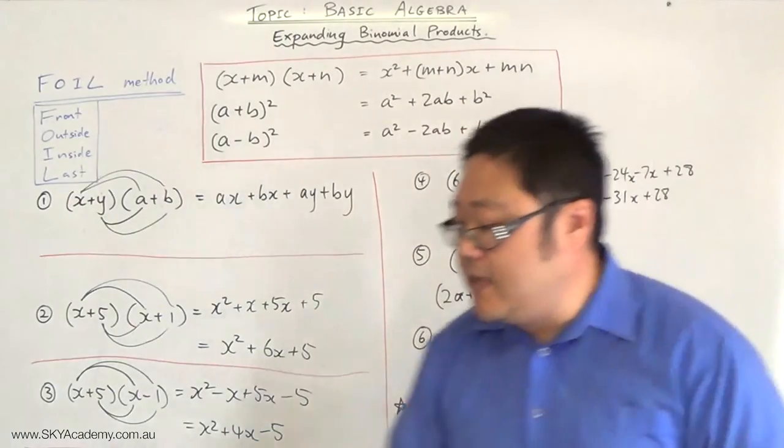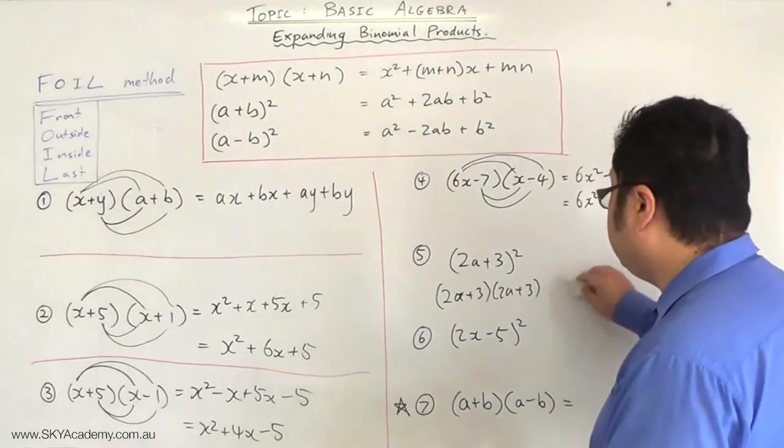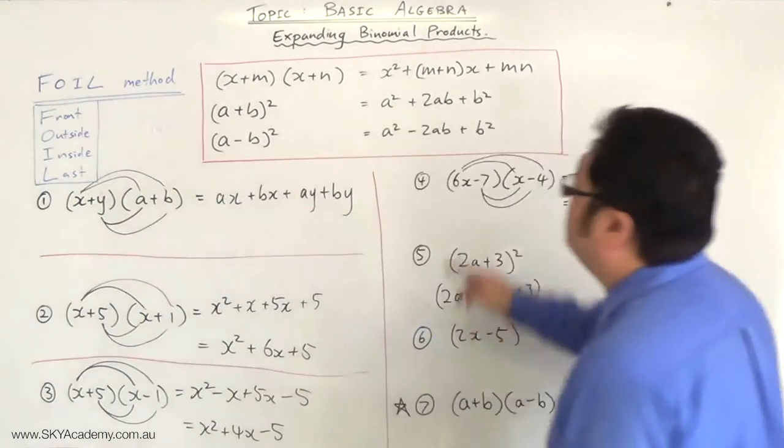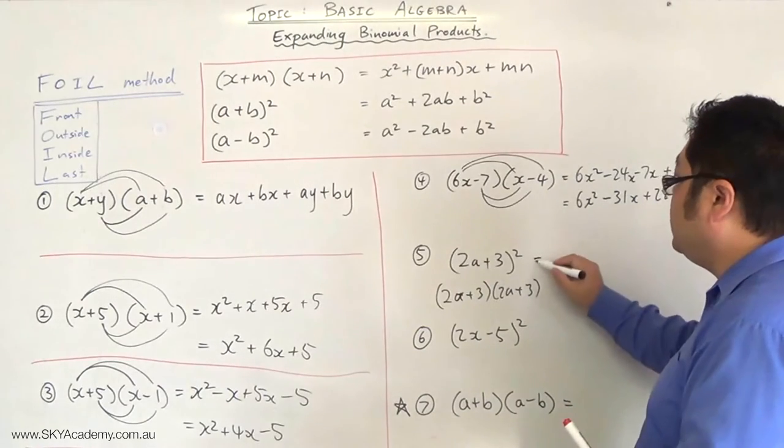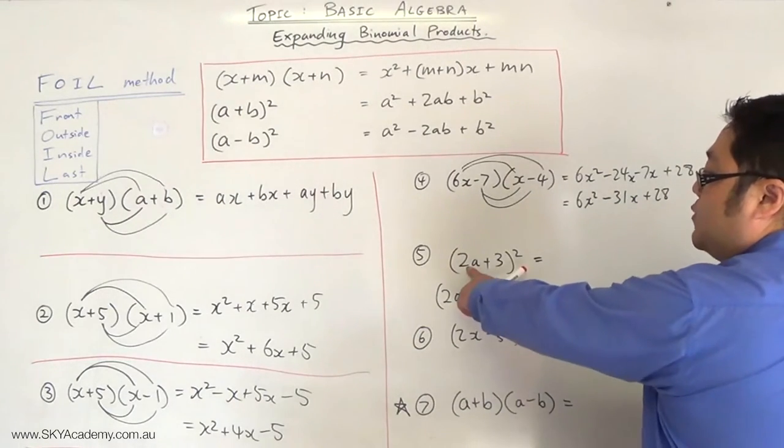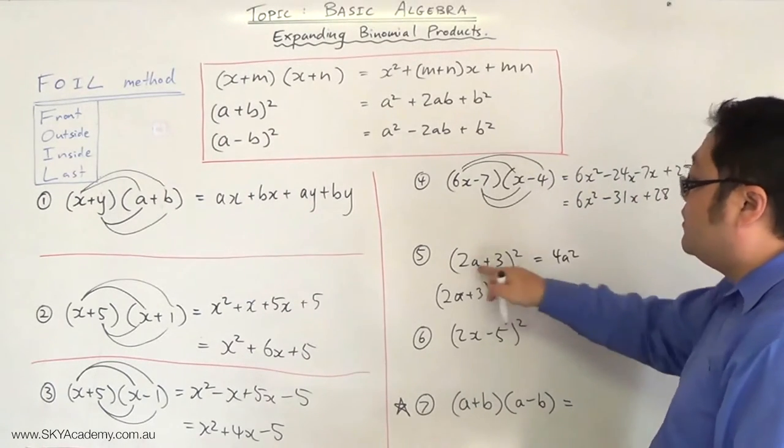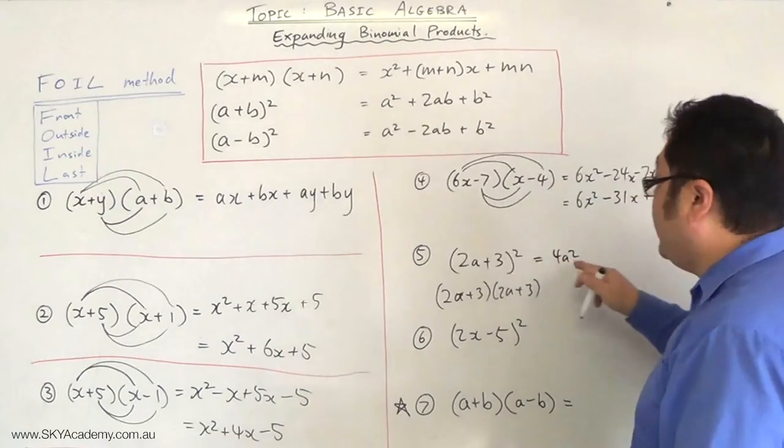That's the other method we could use, but this is exactly the same as that. So let's just substitute into the formula. Basically what we're doing is the first term squared. 2a squared becomes 4a². 2a all squared becomes 4a².